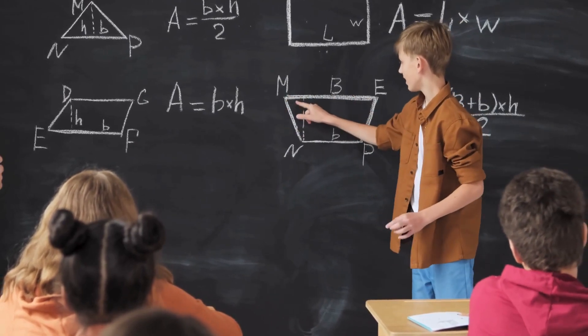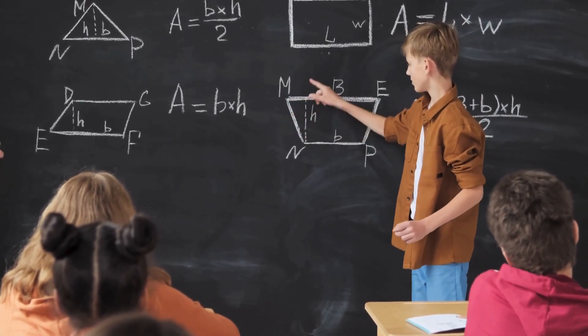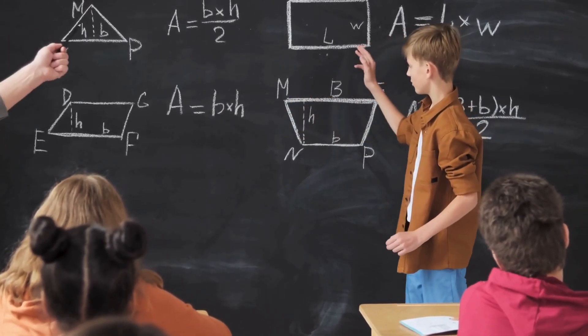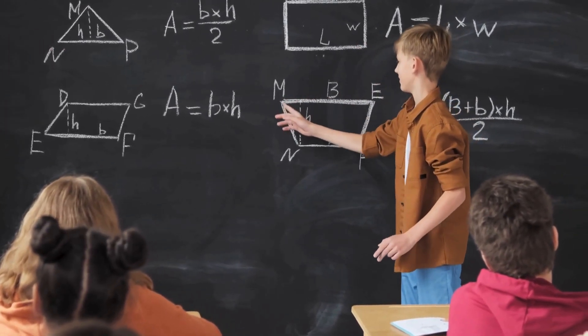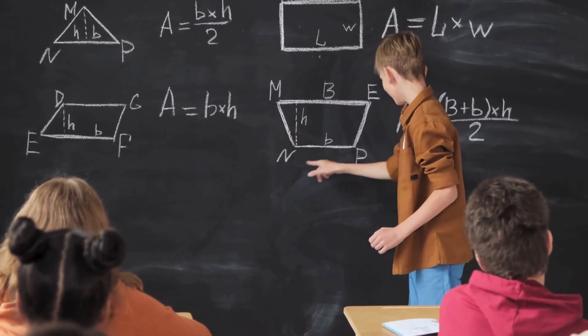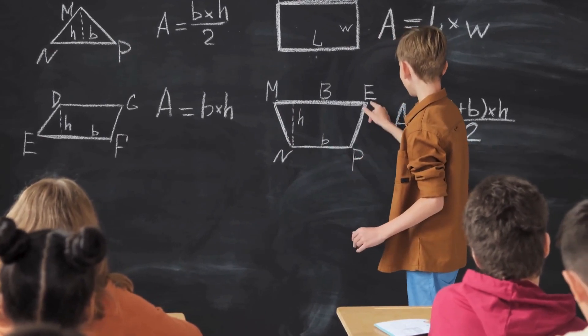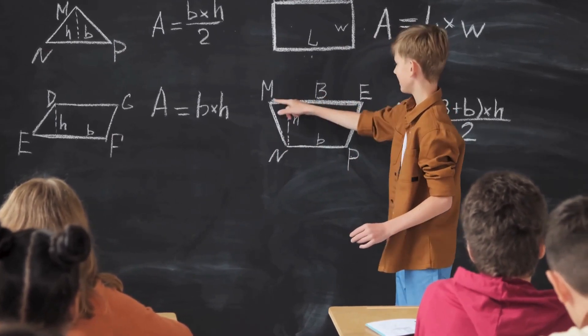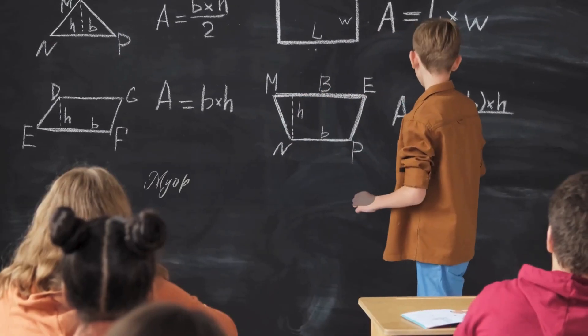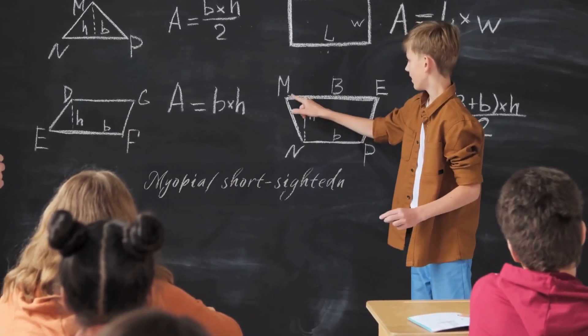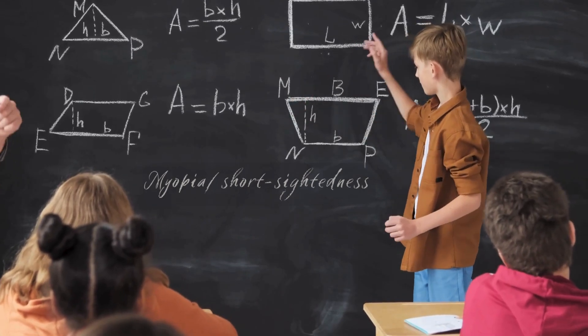Since the child cannot see distant objects like blackboard writing clearly, he is suffering from the defect of vision called myopia, or short-sightedness.